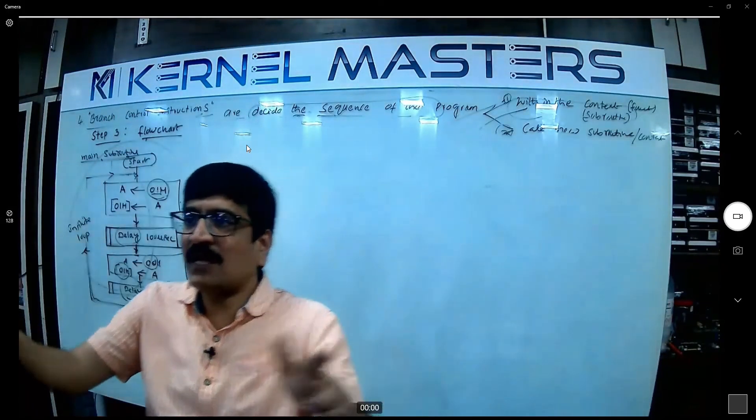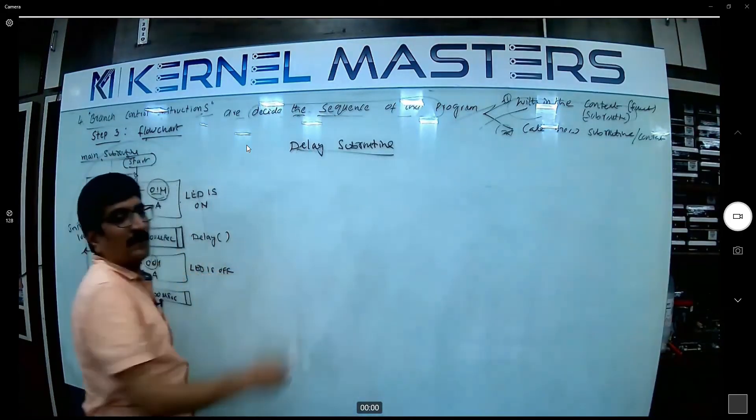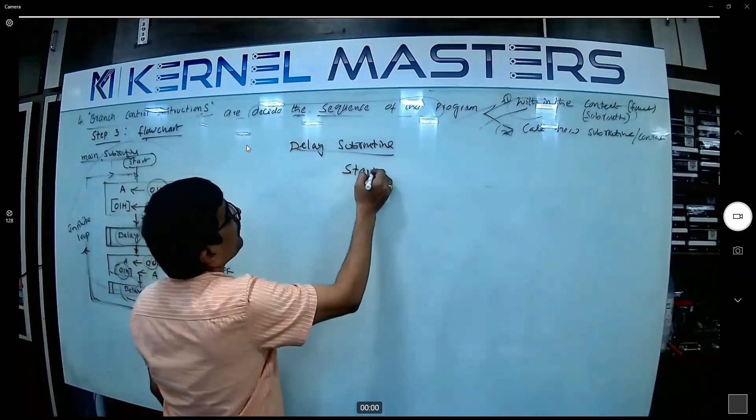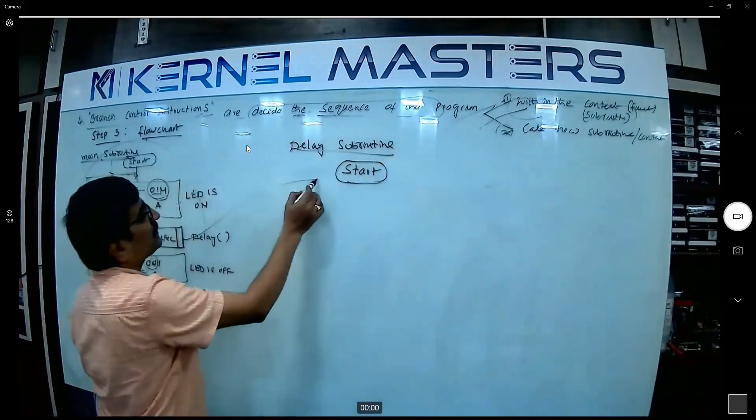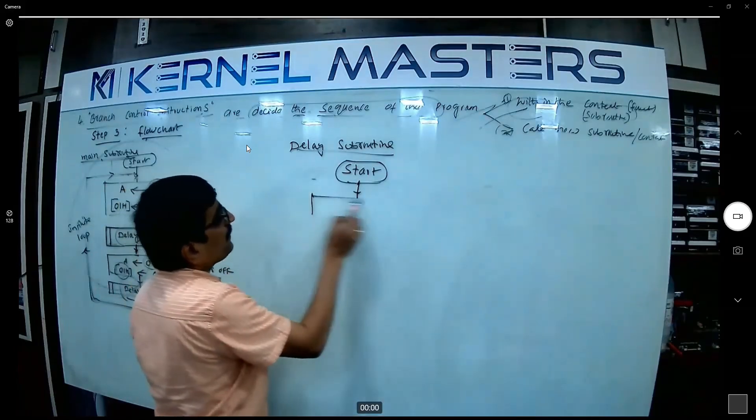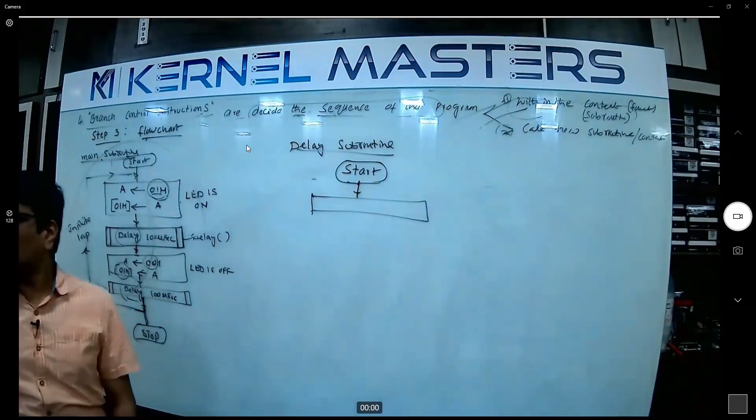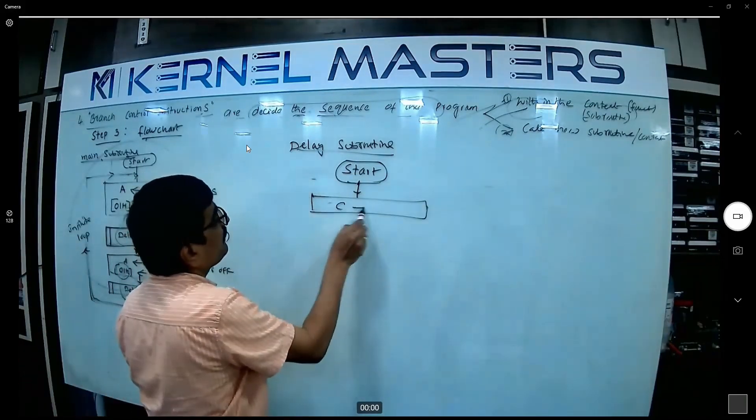Now main subroutine flowchart, delay subroutine flowchart like that. Now delay subroutine flowchart. The delay subroutine flowchart also starts here. Delay - the function work starts here now. You know, start delay starts here. So how many times does the loop run? I'm going to run it 75 times. Okay, C value. C value, tell me 75.